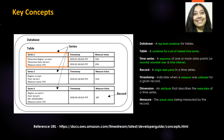Amazon Timestream is a database, so at the top level you can create your database. Under that you have your tables — the database is a top-level container for tables, just like any other database you may have worked with, such as SQL or Oracle. In a table, which is a container for a set of related time series, you organize your data hierarchically.